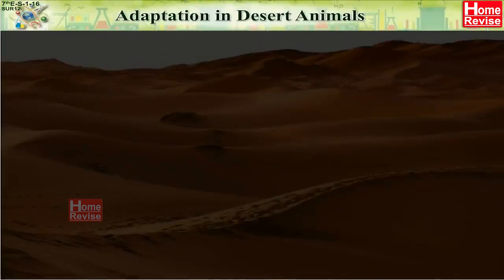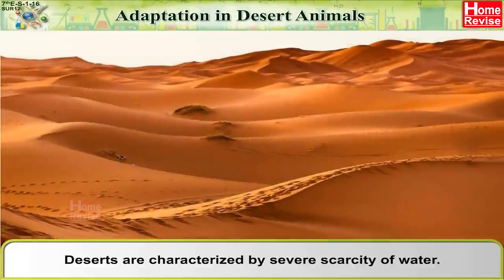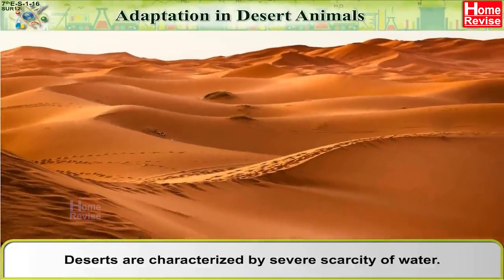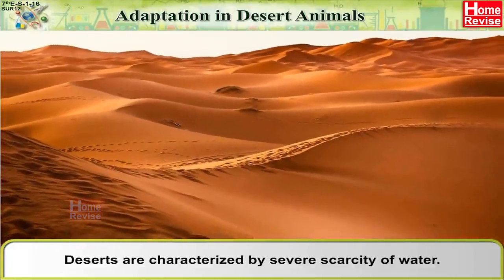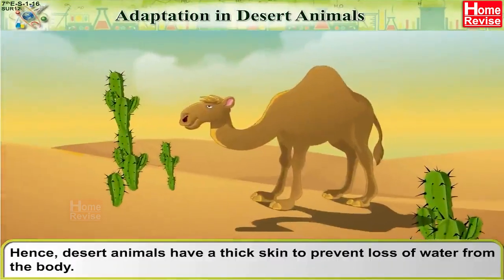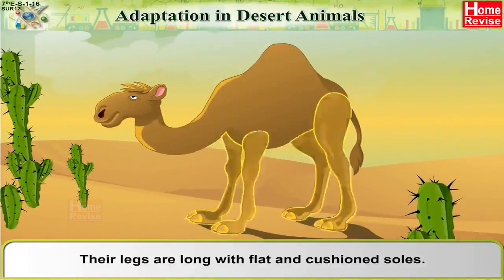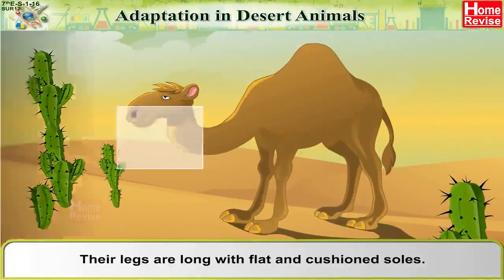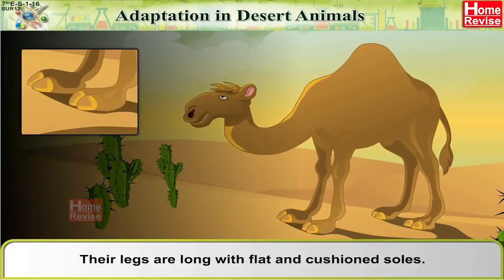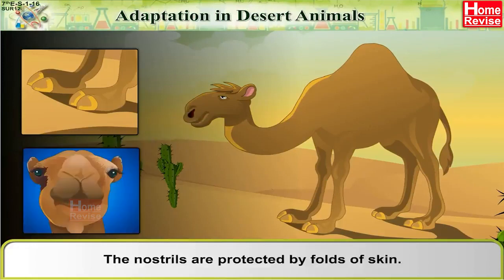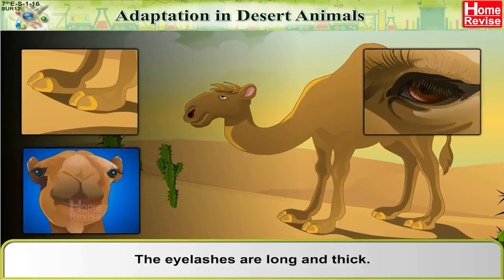Adaptation in Desert Animals: Deserts are characterised by severe scarcity of water. Desert animals have a thick skin to prevent loss of water from the body. Their legs are long with flat and cushioned soles. The nostrils are protected by folds of skin, and the eyelashes are long and thick.